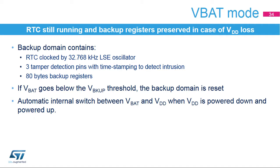The backup domain allows the RTC to remain functional and backup registers to be preserved when the VDD supply is down, thanks to a backup battery connected to the VBAT pin. The backup domain contains the RTC clocked by the 32.768 kHz low-speed external oscillator. Three tamper pins are functional in VBAT mode and will erase the 128-byte backup registers in case of intrusion detection. The backup domain also contains the RTC clock control logic. When VDD drops below a threshold the backup domain power supply automatically switches to VBAT, and switches back to VDD when VDD returns to normal. The VBAT voltage is internally connected to an ADC input channel to monitor the backup battery level, and when VDD is present the battery can be charged from VDD.